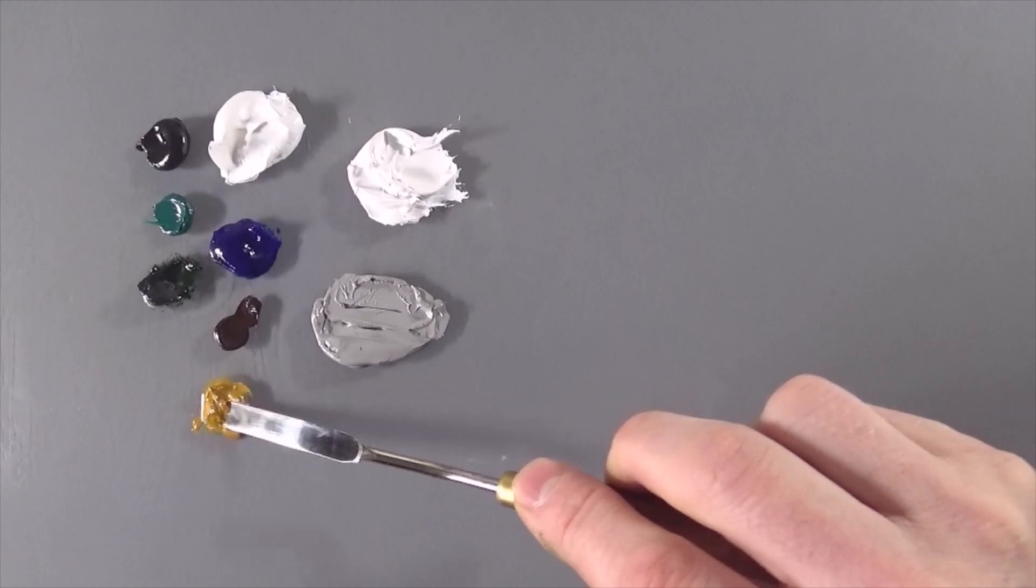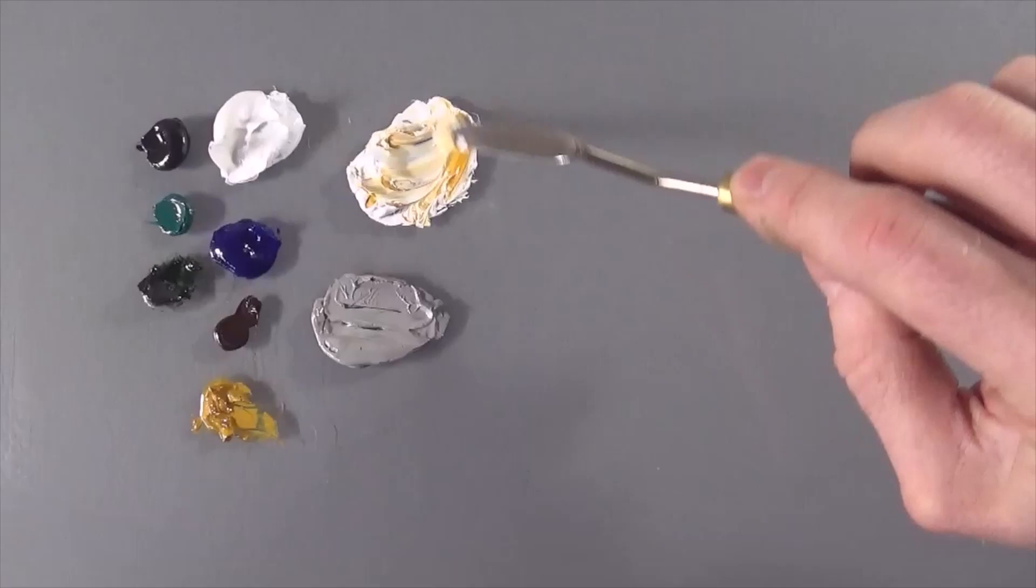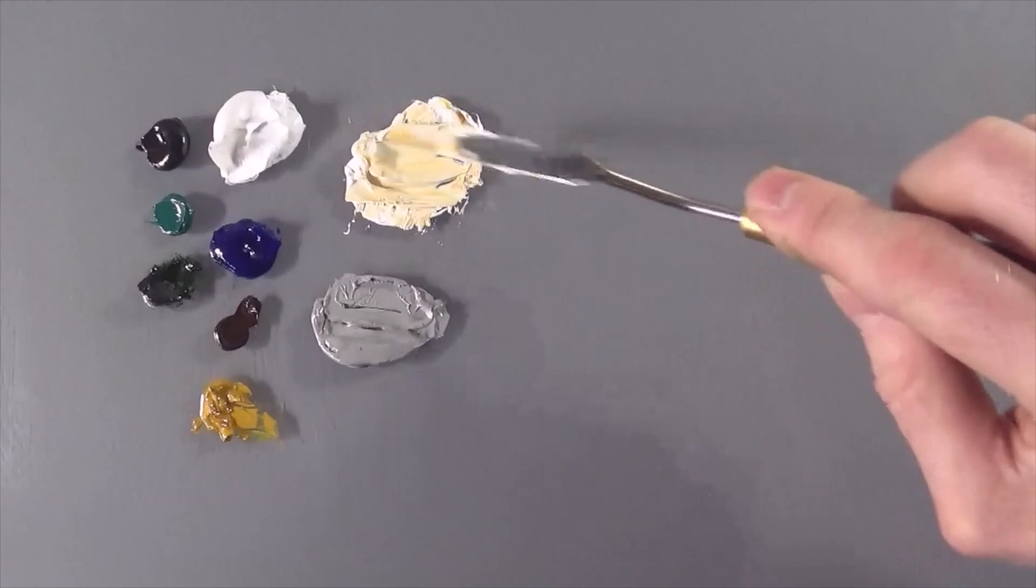Remember, always mix the darker colors into the lighter colors. That just ensures that you're not going to end up having to dilute it with more and more white and just waste loads of paint. Always start with the amount of white that you need and then tint accordingly.